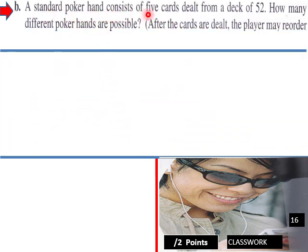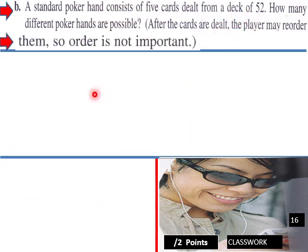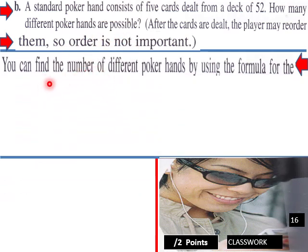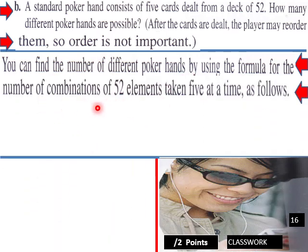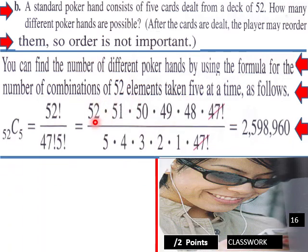A standard poker hand consists of five cards dealt from a deck of 52. How many different poker hands are possible? After the cards are dealt the player may reorder them, so order is not important. You can find the number of different poker hands using the formula for combinations of 52 elements taken 5 at a time: 52C5 equals 52 factorial over (47 factorial times 5 factorial), and when you calculate that out, you get that number.